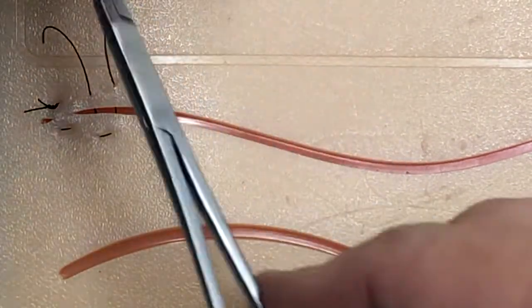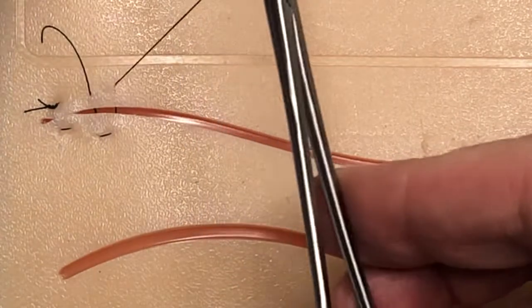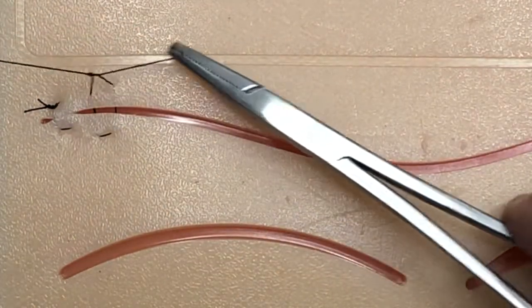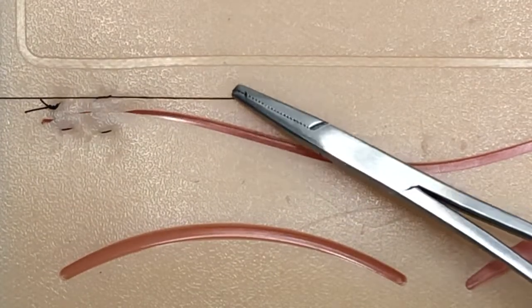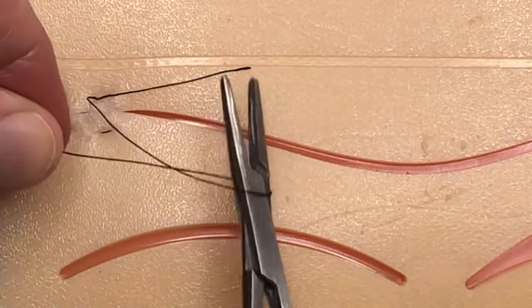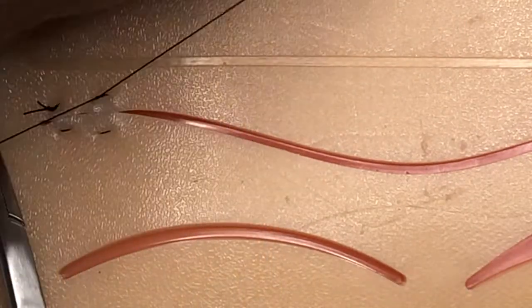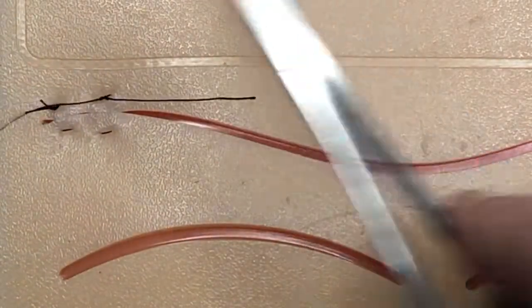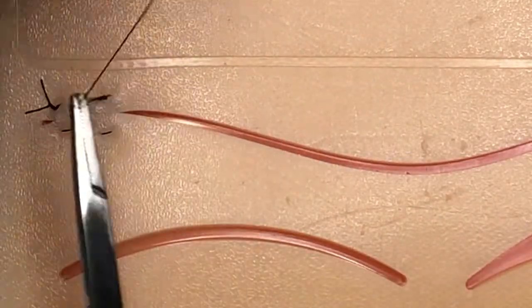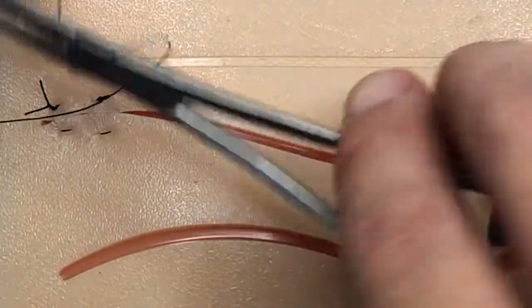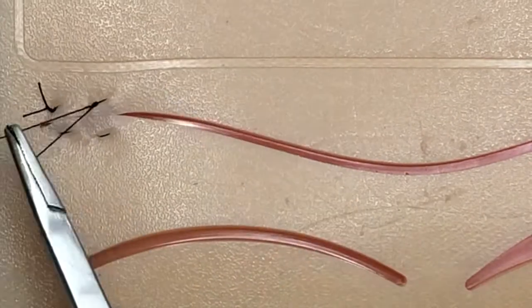Then we're going to do our surgeon's knot. The instrument tie: wrap around two times, grab the tail, pull in the opposite direction. See how that lies down very nicely. Then you take one throw, go in the opposite direction, pull in the opposite direction. One last time, there we go.